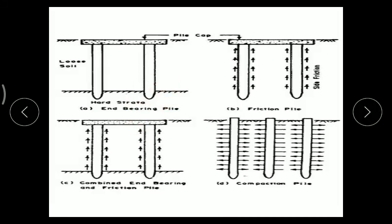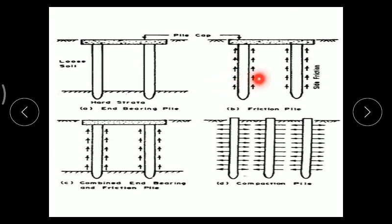End bearing pile and friction pile are the two classifications of pile foundation. Depending upon the support reaction at the tip of the foundation, that is the end bearing pile. If the load is balanced by the frictional force developed at the periphery between the pile and the surrounding soil, it is known as a friction pile.